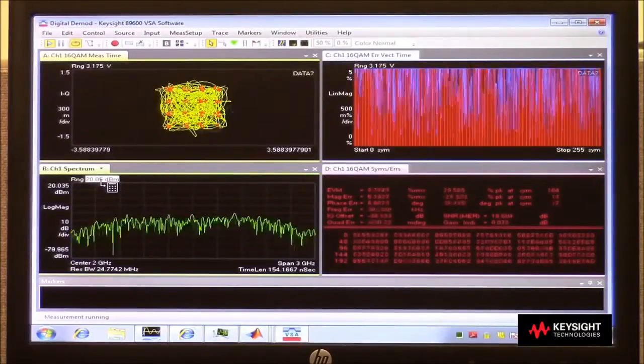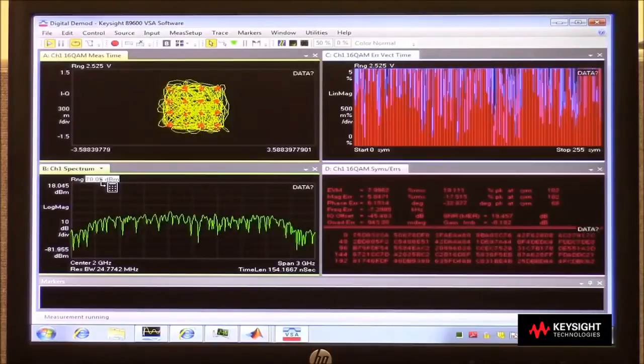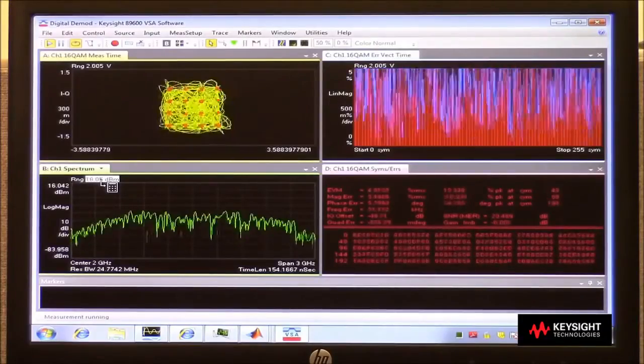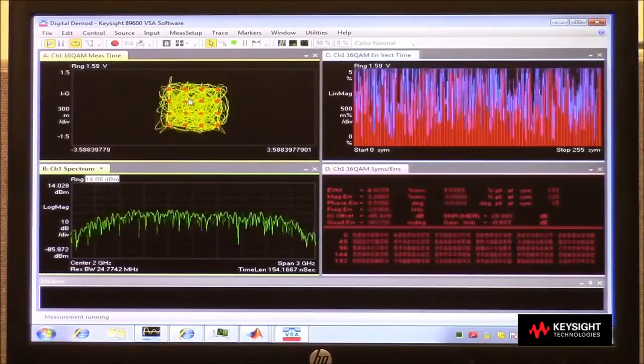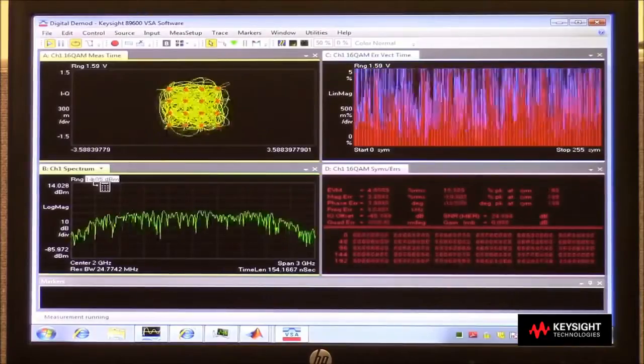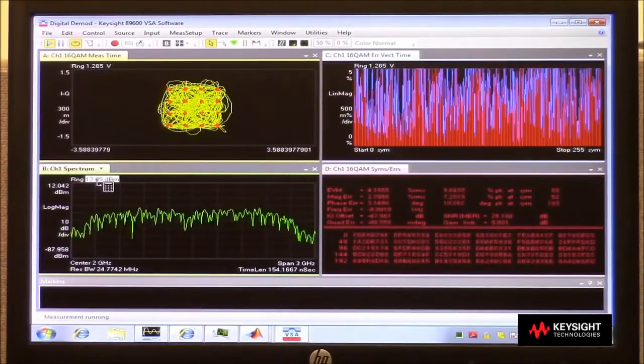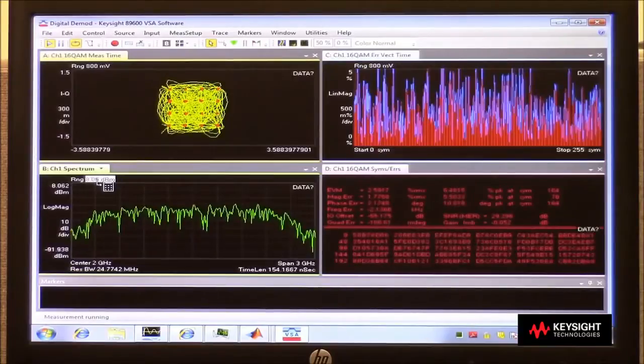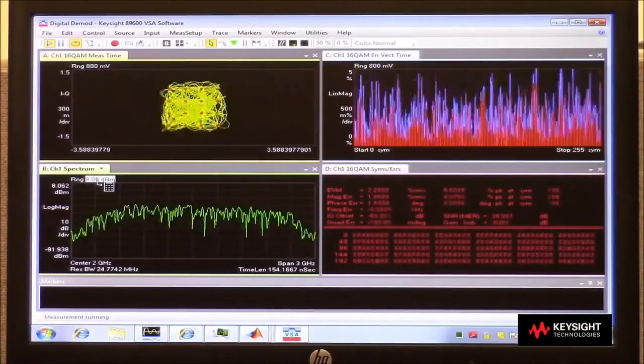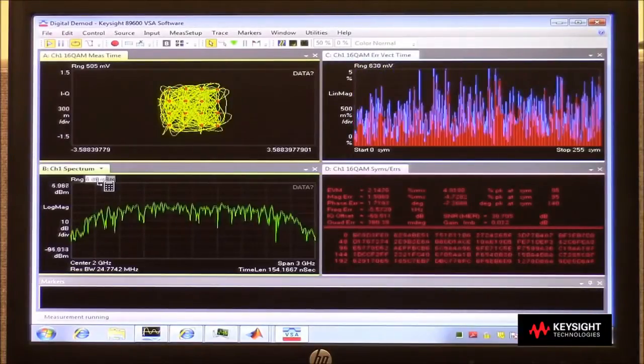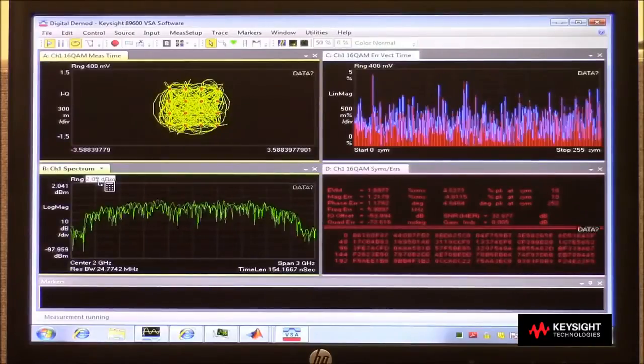So right here on range, I can start dialing up the sensitivity of the oscilloscope. And as I do that, notice in the constellation diagram, how my dots are getting more and more clear, as I have a larger and larger signal filling the screen of the scope.